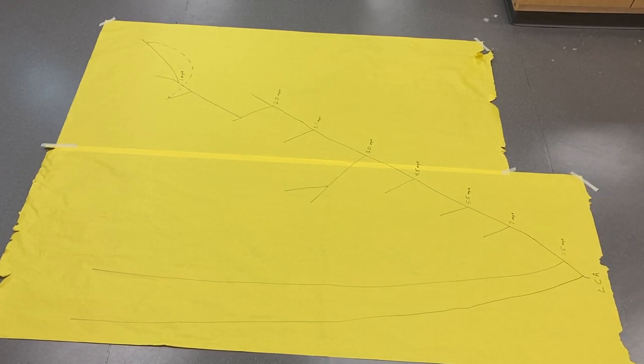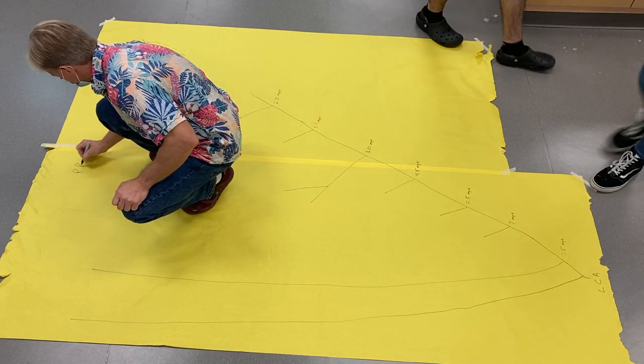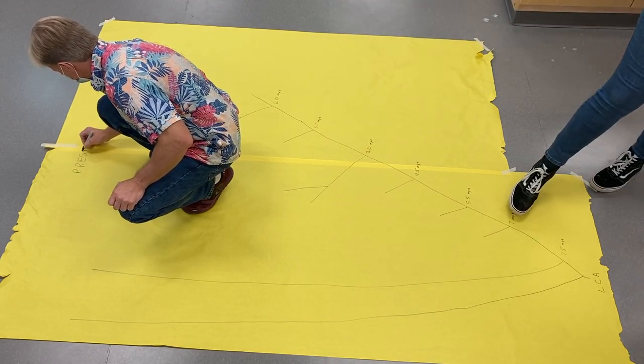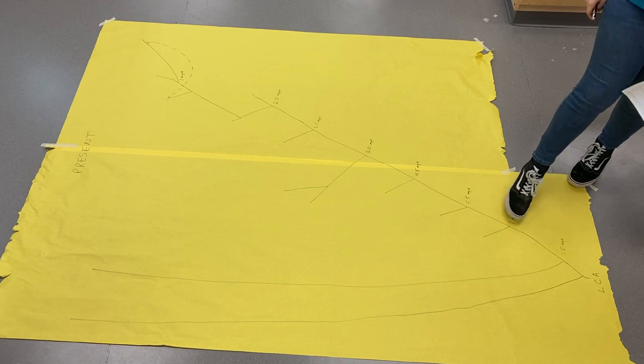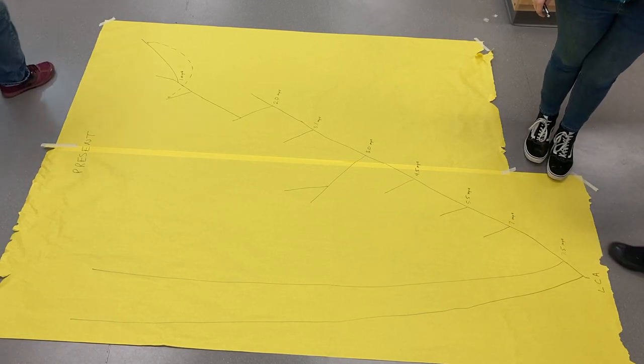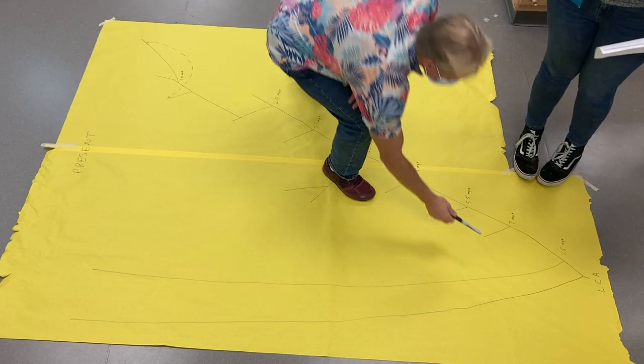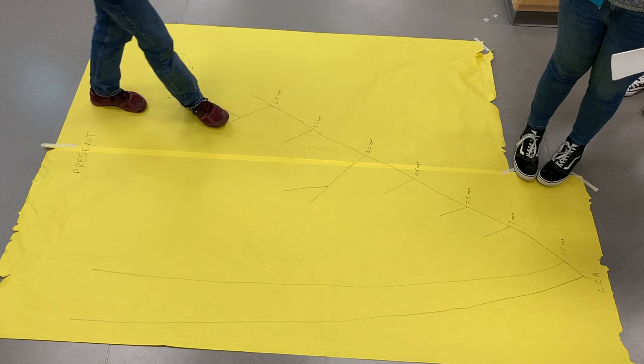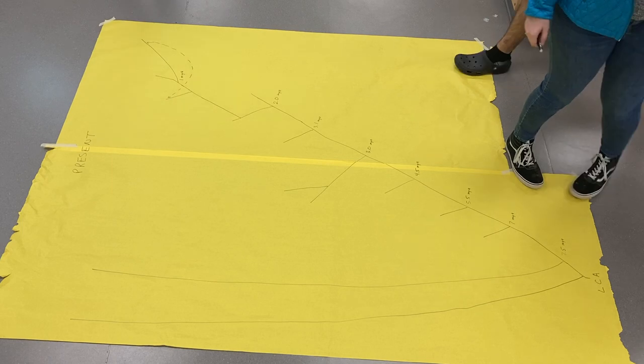So ask yourself the first question, who's going to go way back there at the bottom and who's going to go way up there at the top and then try and fill in. The ends of the lines mean where you're going to put the skull. This is present day here.